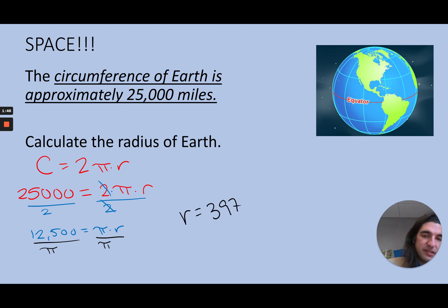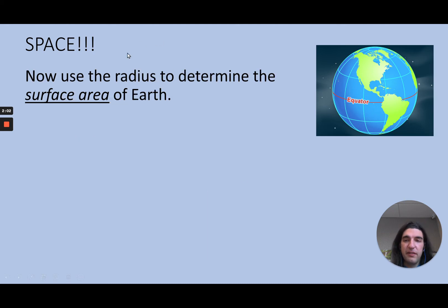So this is a pretty common approach, especially in astronomy, because you can't directly measure the radius of a planet or a star, but you can find the circumference and then just calculate the radius from there.